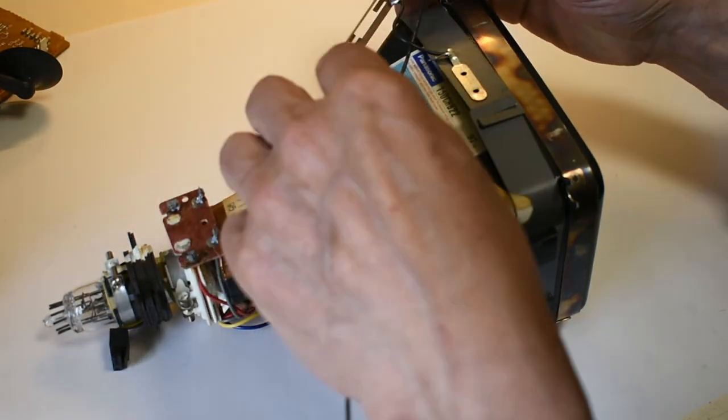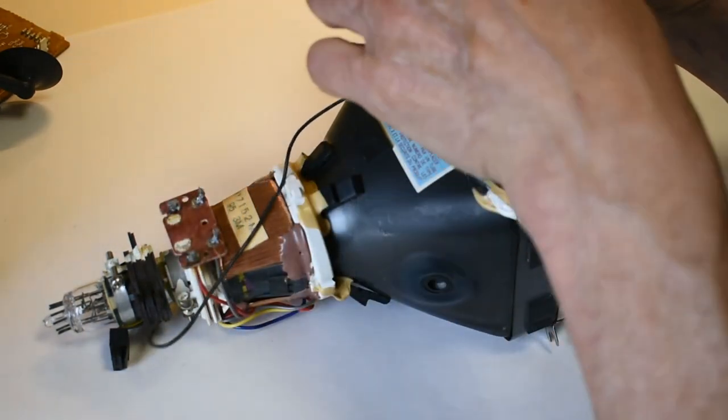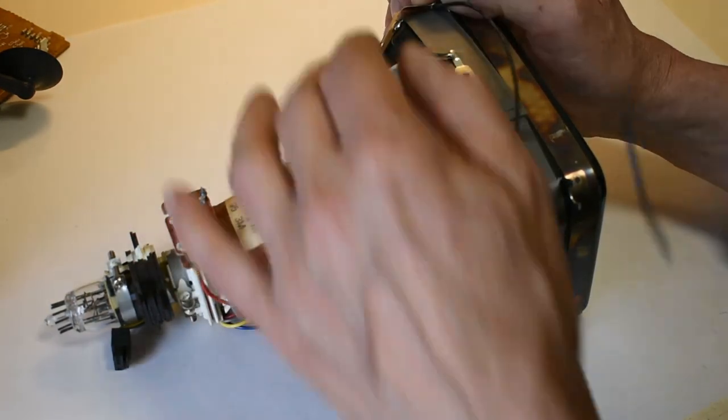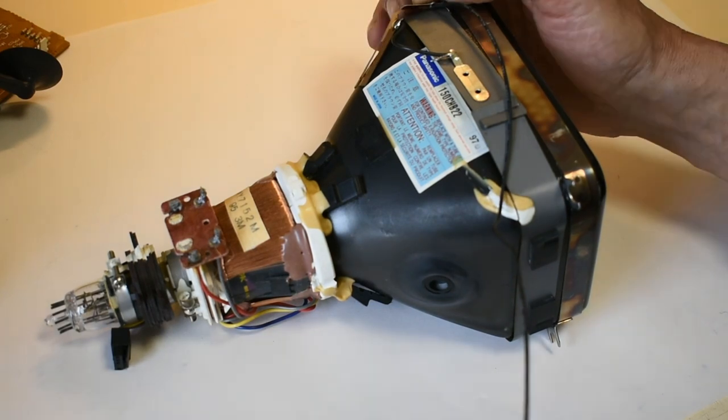And this is just our earth strap at this point here and the connection for it, which sits on there, which is onto this Aquedag or graphite coating on the outside here.